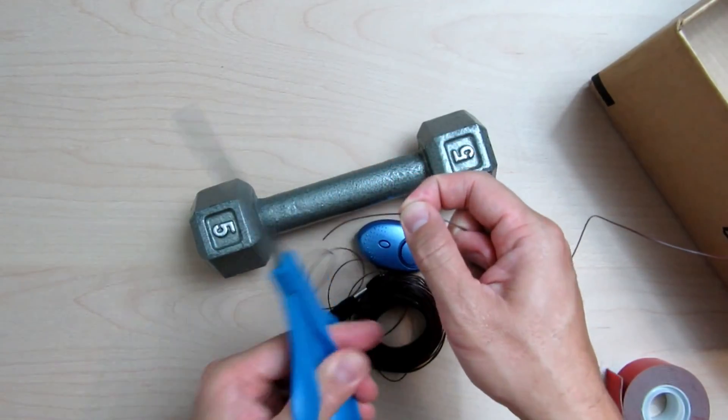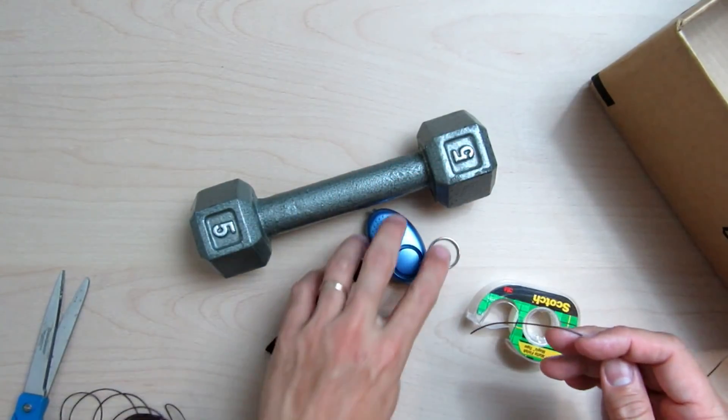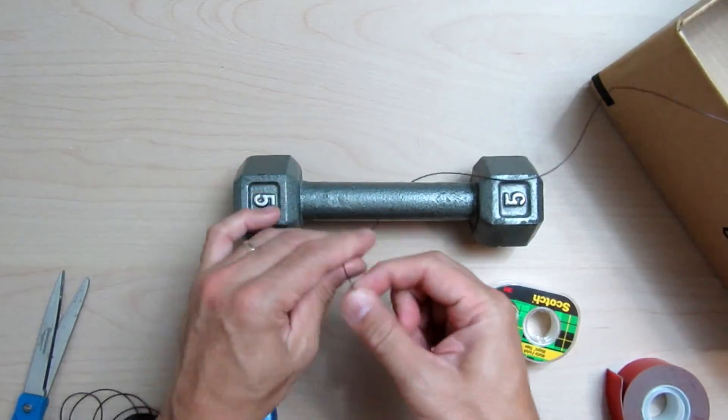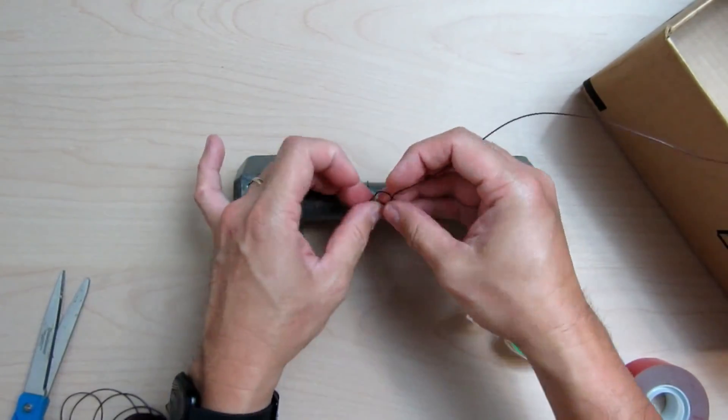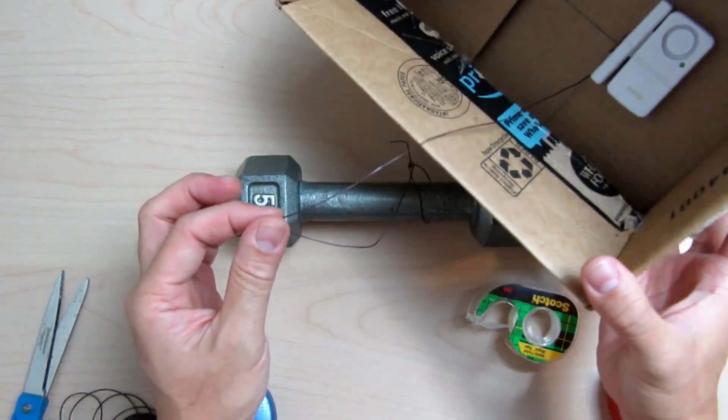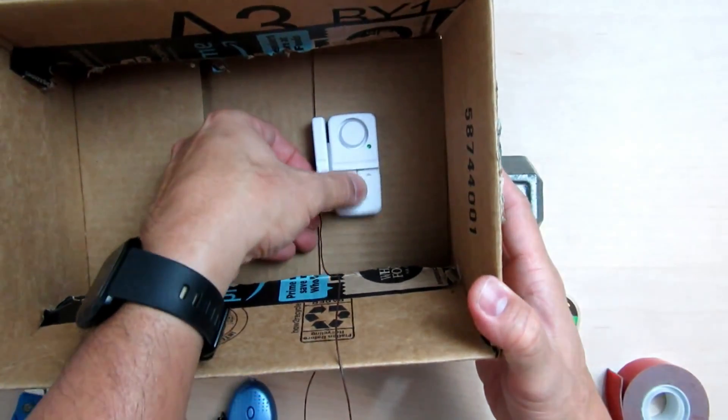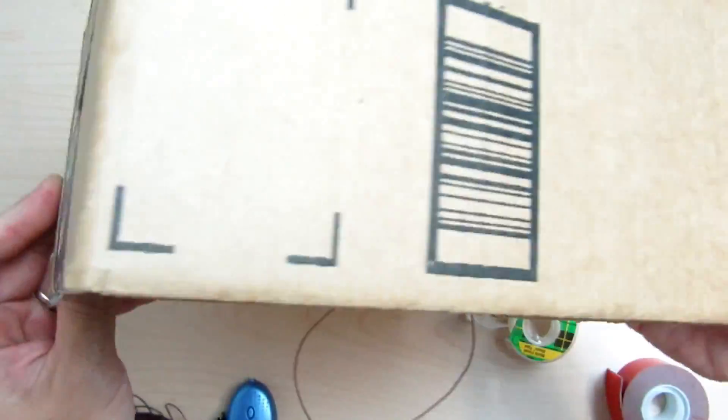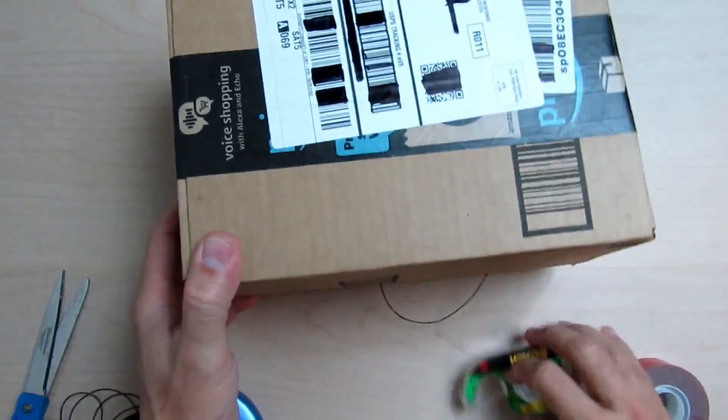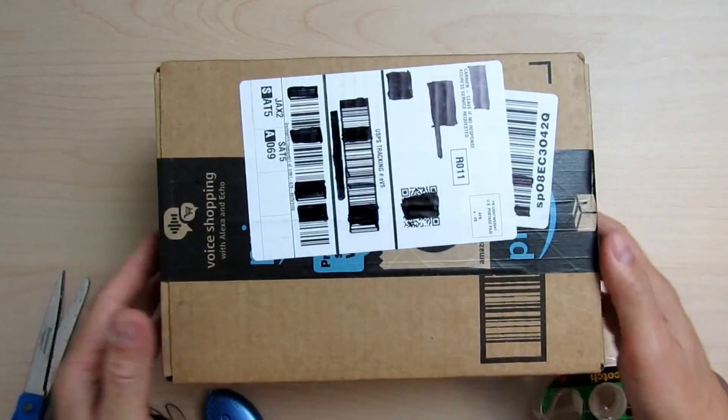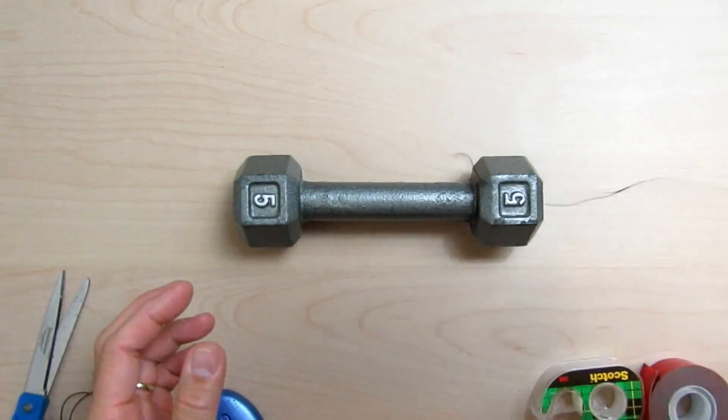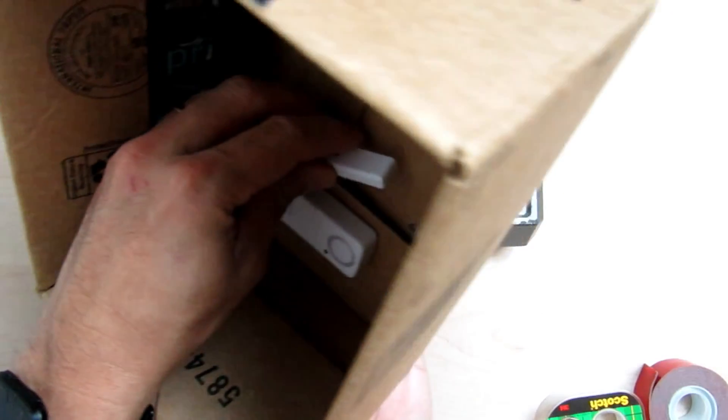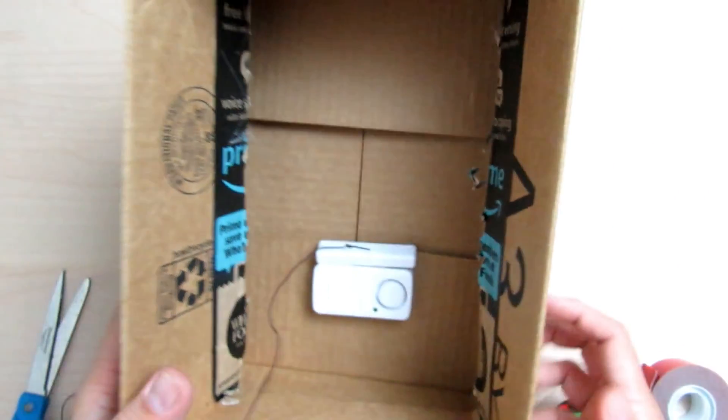Cut the string or wire long enough for you to be able to tie it on your anchor weight. With the dumbbell, you can easily wrap it around. That's it. All you need to do is arm the alarm and it should be ready to go. Let's try it out. It works.